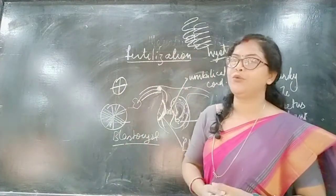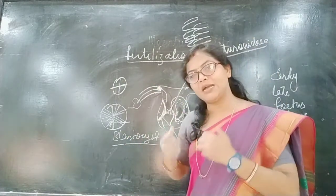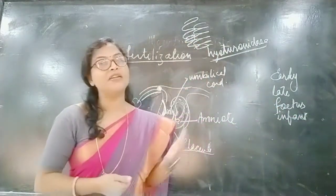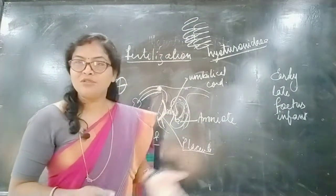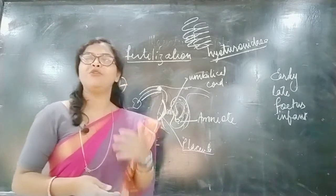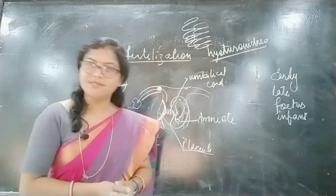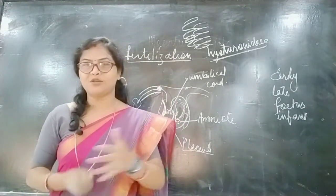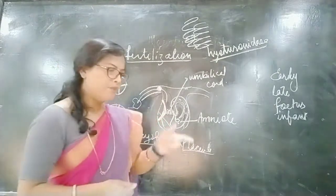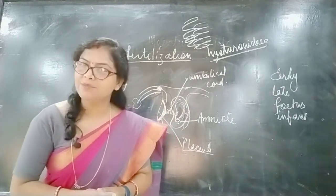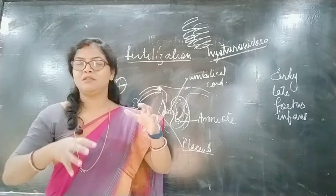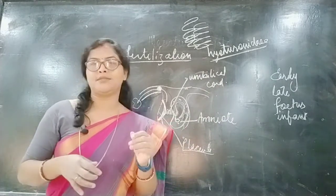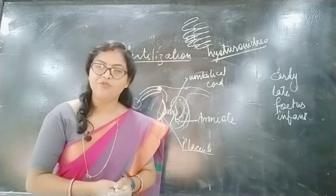When the baby comes out, the placenta and umbilical cord also come out from the body of the mother. I hope you have understood fertilization, and how it is interconnected with the menstrual cycle. Please like and subscribe the video and wait for the next video where I will explain the complete definitions of the different processes of reproduction. Thank you, have a good day.